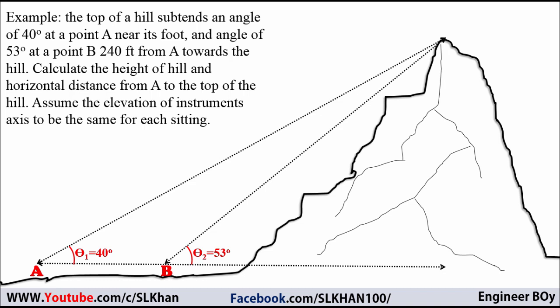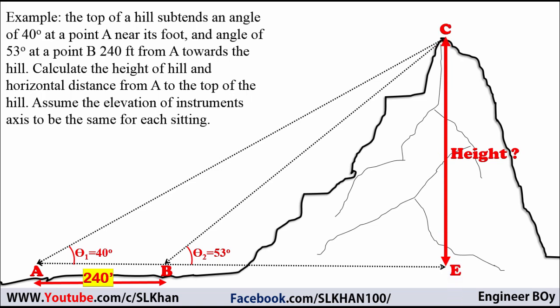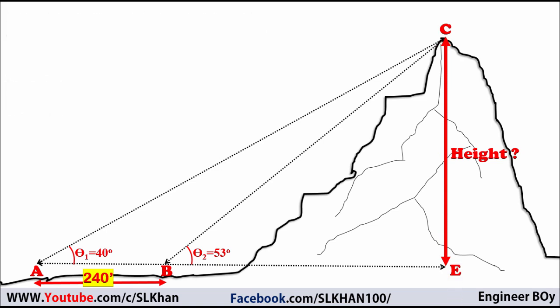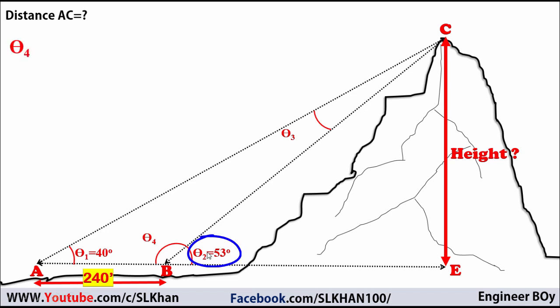From point B, sighting the top of the mountain gives an angle of 53 degrees — call this theta 2. Distance AB is 240 feet, which is known. To calculate height CE we need distance AC, the hypotenuse of triangle ACE. For that we need theta 4 and theta 3. Theta 4 is simple: since line AE is horizontal and straight, it makes 180 degrees, so theta 4 equals 180 minus theta 2, which is 180 minus 53 degrees.